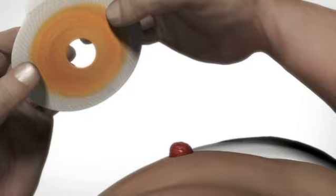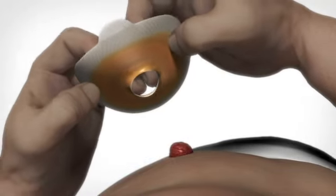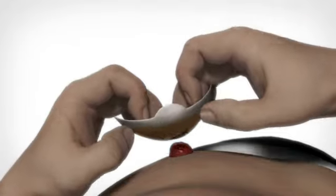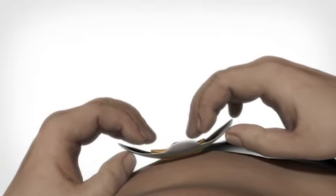When applying the adhesive to the skin around the stoma, it must make full contact with the skin. Before applying the adhesive to the skin, form the edge of the hole in the adhesive to a spout shape to face the skin.